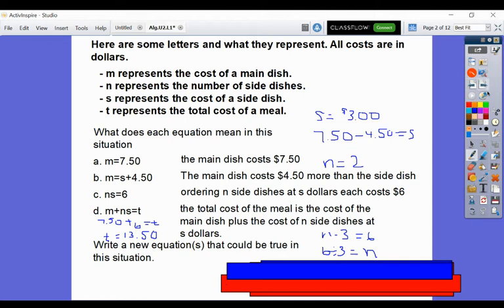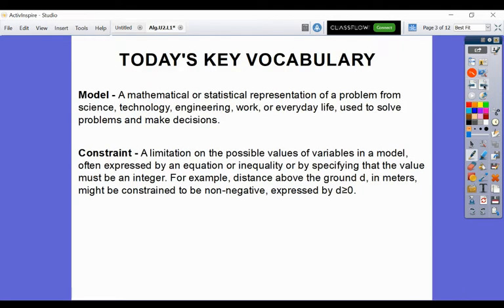All right. As we move on to the next page, our two key vocabulary words are model and constraint. You guys can read those over on your own. You can find the glossary on page 382.